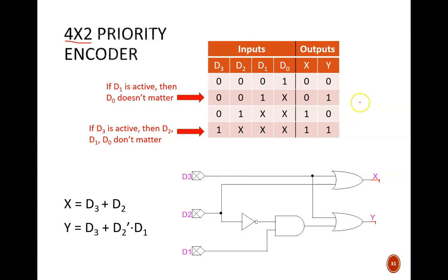Beginning at the bottom, if d3 equals 1, then none of the other inputs matter. d3 is the highest numbered input, so it gets priority. Therefore, don't care x's are filled in for the other input columns, and the output must be 11, the binary code for 3.